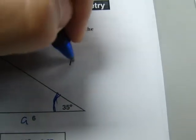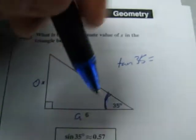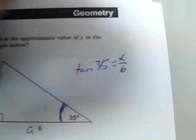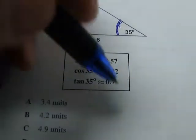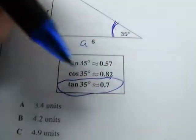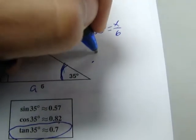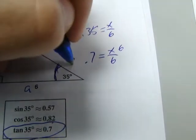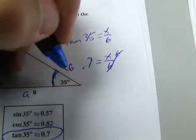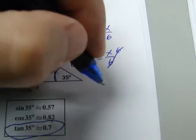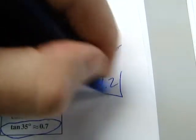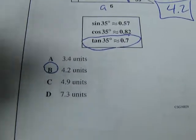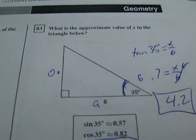Therefore, tangent of 35 equals x over 6. So let's figure it out. And it tells us the three things. The one we're going to use is tangent because it's a tangent problem. So it's going to be .7 equals x over 6. We'll multiply by 6 on both sides. And we'll get 6 times 7 is 42. We move the decimal over 1 so we get 4.2. Look for your answer. There it is. B is the answer.